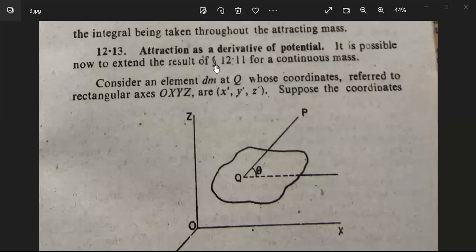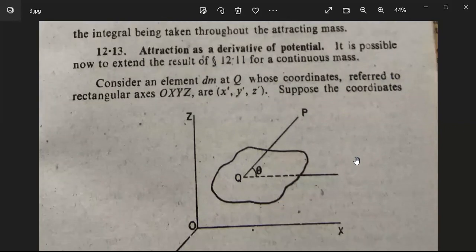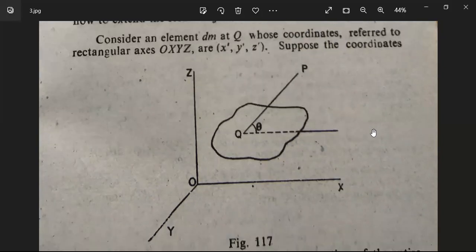Our next topic is attraction as a derivative of potential — potential due to continuous mass. It is possible to extend the result of Article 12.11 for a continuous mass. Consider an element dm at point Q, whose coordinates referred to rectangular axes O are x', y', z'.